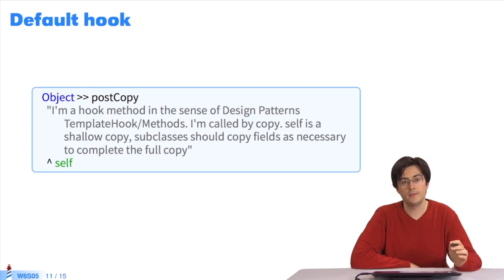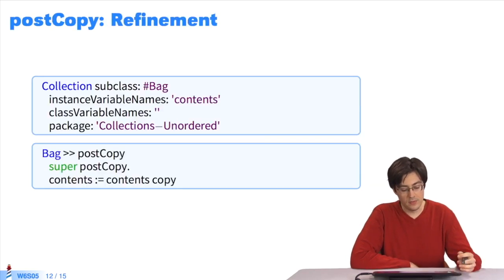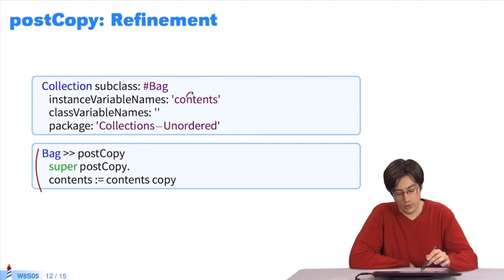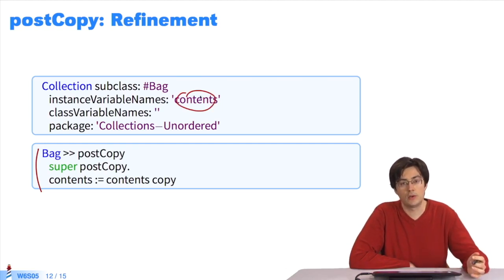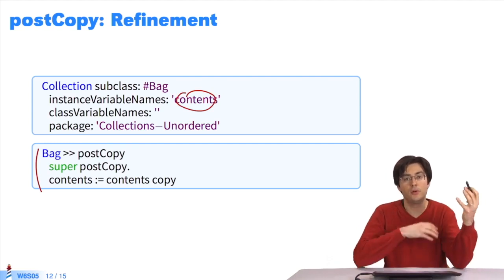The postCopy default setting shares everything. It simply returns the current object. But we could also imagine other applications for postCopy. For example, in the bag class, bag is a type of collection, and its postCopy method copies its contents.